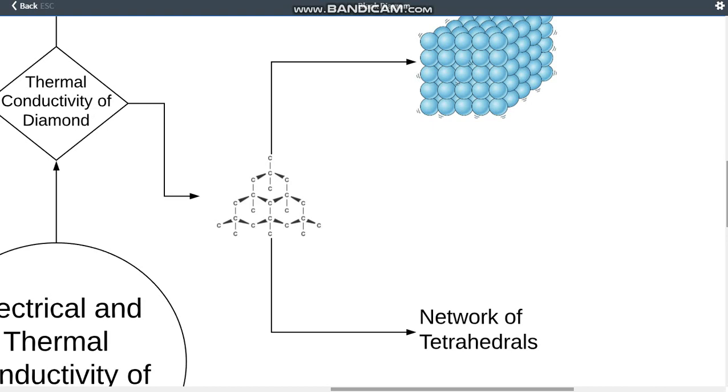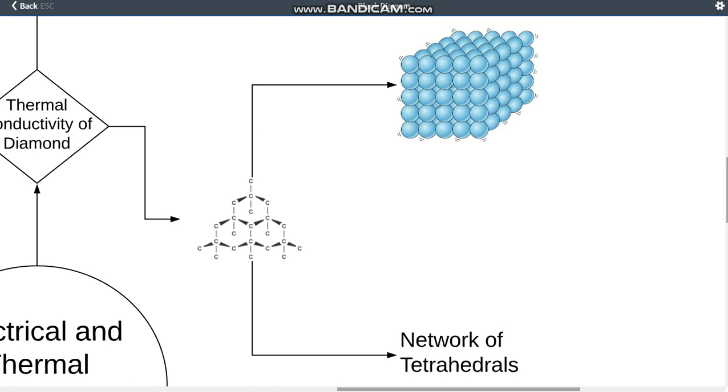These tetrahedrals are connected very strongly with covalent bonds, which are one of the strongest bonds. Since these carbons are so tightly bonded together with strong covalent bonds, this allows the carbon atoms to be very tight together.